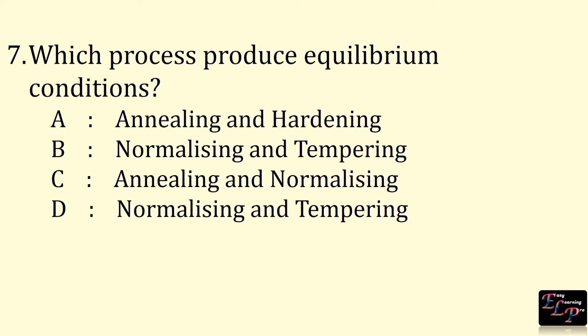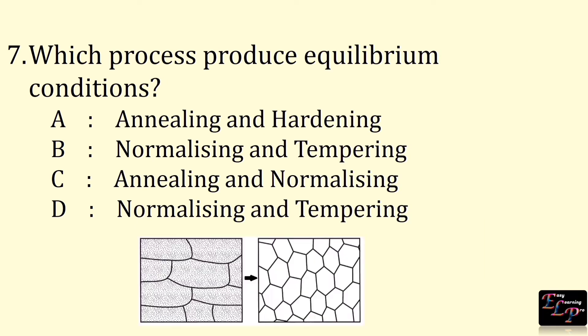Next question: which process produces equilibrium conditions? Equilibrium conditions can be produced by both annealing and normalizing.